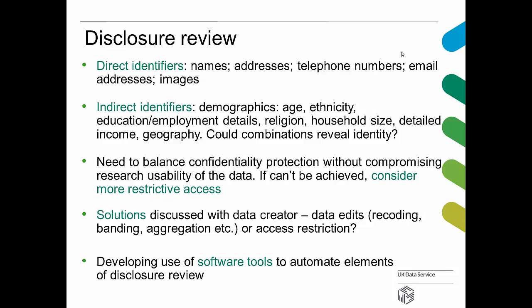We discuss all these solutions with the data creator, and that's not just for confidentiality reasons. We will look at data edits, recoding, banding, aggregation, etc., for anonymization, or we would agree the kind of access restriction they may want. What we try and do is open a dialogue with the depositor as soon as possible and make sure that we liaise with them and build up a good relationship so that we can work together to provide a very good dataset for the secondary user. At present, we're developing the use of software tools to automate some elements of disclosure review, especially where looking at indirect identifiers is concerned. All the software we're currently using is open source and based on algorithms which check the indirect identifiers and key variables against each other.